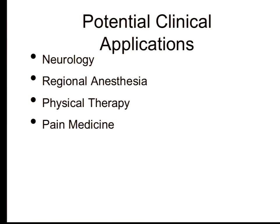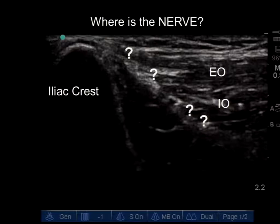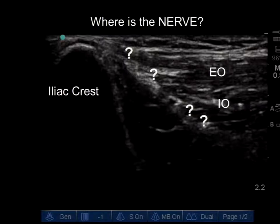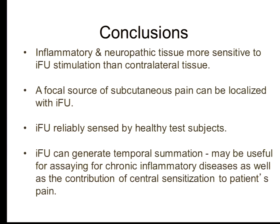Potential clinical applications include neurology, regional anesthesia, physical therapy, and pain medicine. In regional anesthesia, we put the needle in and try stimulation when we cannot see the nerve — it would be very useful if the TAB device could palpate nerves inside or structures we believe to be nerves, and with stimulation at the right frequencies we can induce motor or sensory responses non-invasively prior to needle placement. In conclusion: inflammatory and neuropathic pain tissues are much more sensitive to IFUS stimulation; focal sources of subcutaneous pain may be located with IFUS stimulation; it was reliably sensed by healthy human subjects; and most importantly, it can generate temporal summation — meaning we can use it as a real QST test.